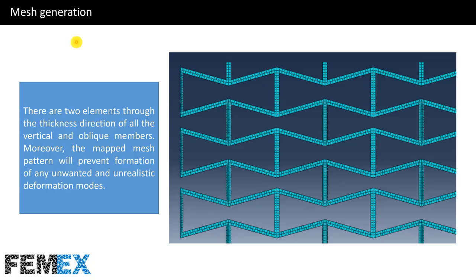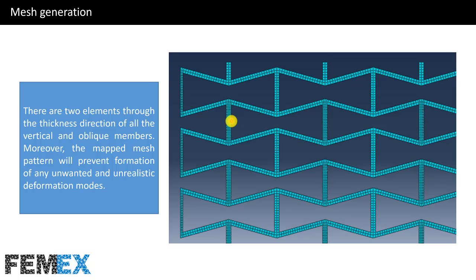Now I want to talk about the generated mesh in the modeling of this tutorial. There are two elements through the thickness direction of all of the vertical and oblique members. Here you can see that for the vertical members we have two elements through the thickness direction, and also for the oblique members. And in some of them we have four elements through the thickness direction.